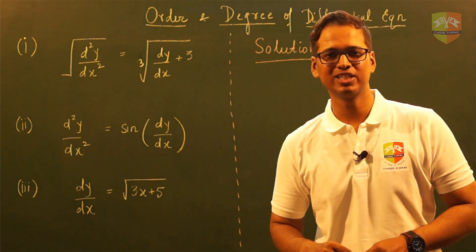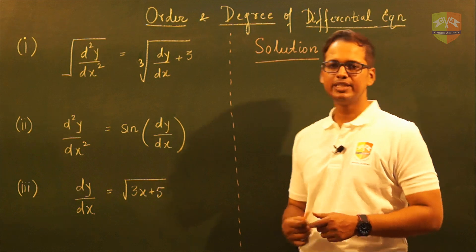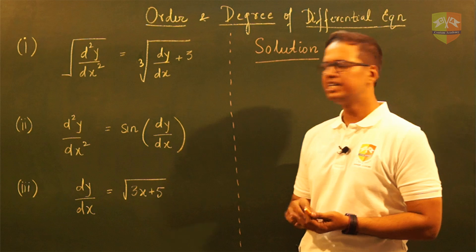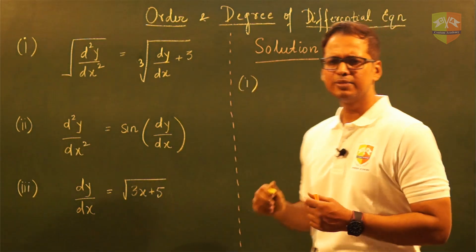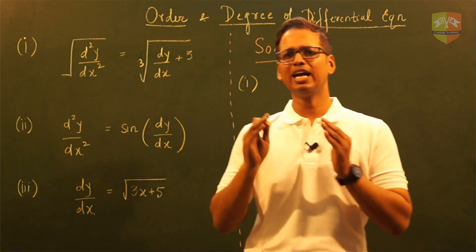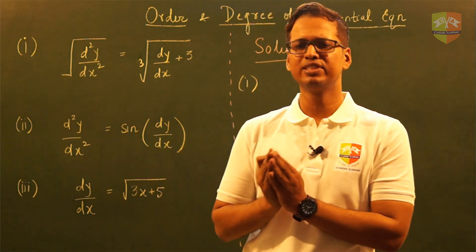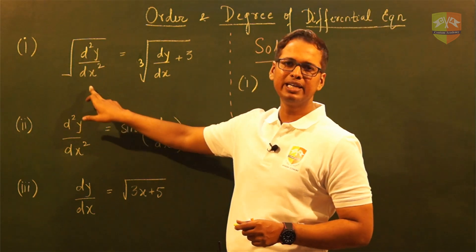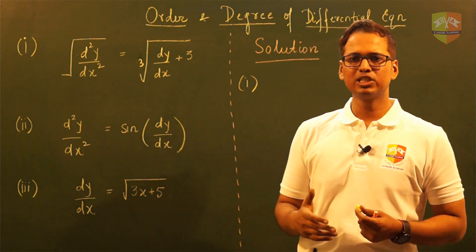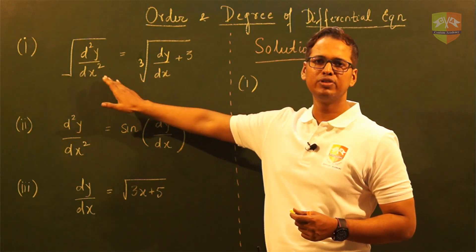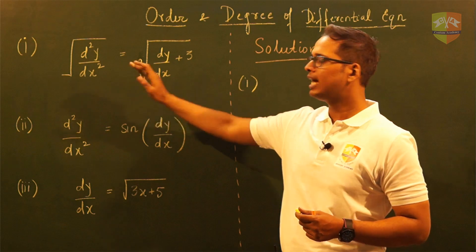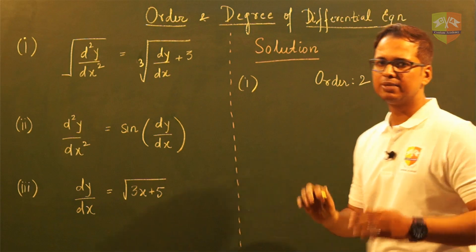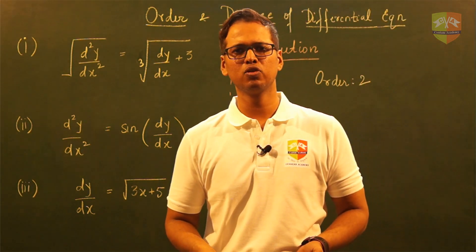Let us solve the questions displayed on the screen. We'll start with the first question — we need to find the order and degree of this differential equation. In order to find the order, we just see which is the highest differential coefficient of y with respect to x occurring in that differential equation, which clearly is the d²y by dx² term. So d²y by dx² is the highest differential coefficient, hence order becomes 2. Finding order doesn't take much time — you just have to identify the highest differential coefficient.